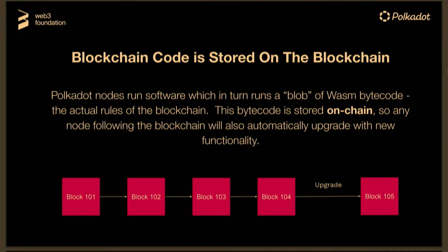A very cool thing about Polkadot is that the rules for both the relay chain and the parachains are not stored on the nodes — they're actually stored on the blockchain itself, which means it's very easy to upgrade. Any node following the rules of your chain will automatically upgrade as the chain moves to the next runtime — the next set of rules. It's WebAssembly bytecode stored on-chain, so you can actually view and interpret the rules of the chain yourself. One thing that just got released — about two days ago — is something called Chopsticks on Polkadot.js, which allows you to fork a version of any chain and play around with it yourself.